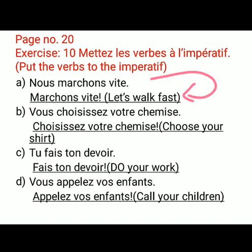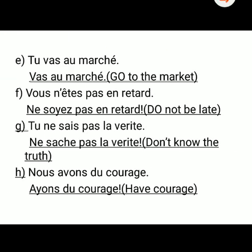I have done exercise 10 for you and also written the meaning of each line. Part A: Marchons vite means let's walk fast. Part B: Choose your shirt. Part C: Do your work. Part D: Call your children. Part E: Go to the market. Part F: Don't be late. Part G: Do not hide the truth. Part H: Have courage.